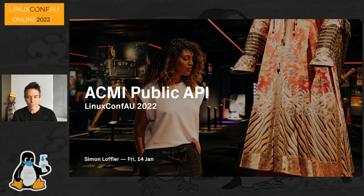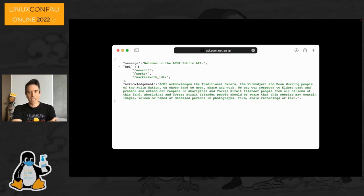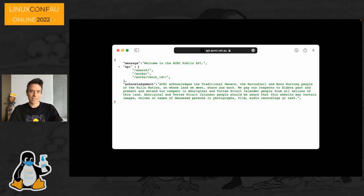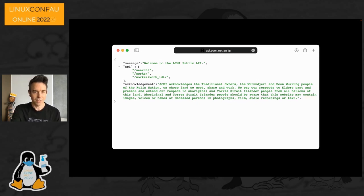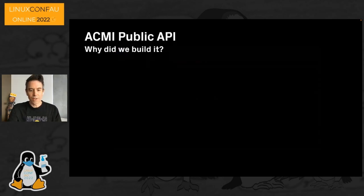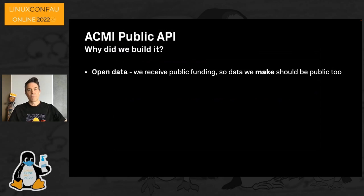Last year I talked about how we built the digital infrastructure and private APIs that power ACMI, including how we deploy about 400 Raspberry Pis and Dell microcomputers. This year I'm back to talk about the work that our team has done releasing our first public API. You can see it in your browser at api.acmi.net.au.